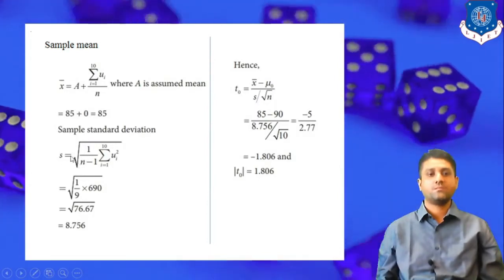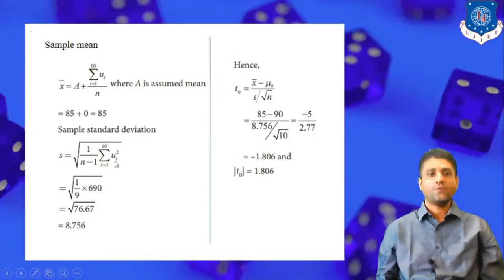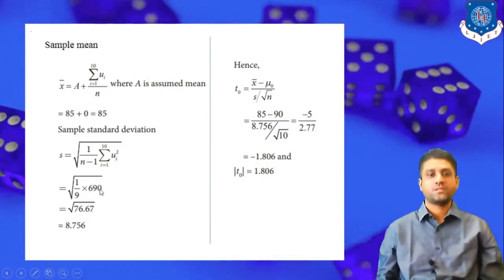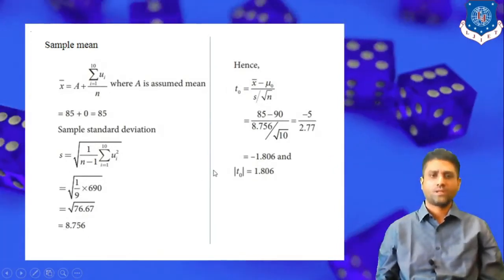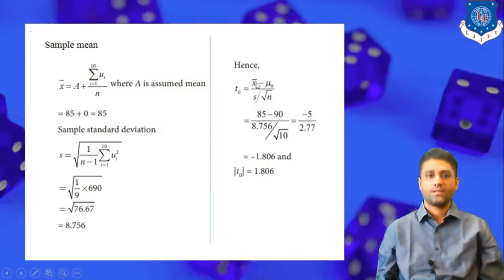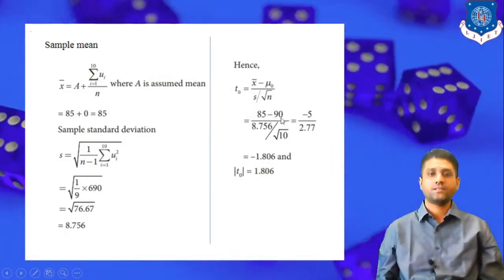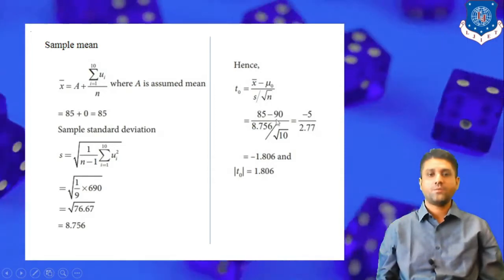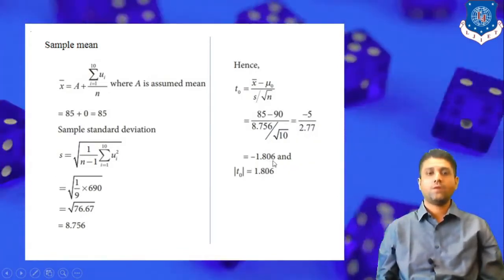We find the standard deviation using s = √(Σuᵢ² / (n−1)), where n−1 is the degrees of freedom. Σuᵢ² = 690 and n−1 = 9, so s = 8.756. We then calculate the t-statistic: t = (x̄ − μ₀) / (s / √n) = (85 − 90) / (8.756 / √10) = −5 / 2.77 = −1.806.